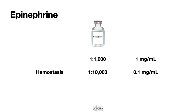On the other hand, if we want to use epinephrine to prevent bleeding during polyp resection — either endoscopic mucosal resection (EMR) or endoscopic submucosal dissection (ESD) — then we use a more diluted epinephrine at 1 in 100,000 dilution, that is 0.01 milligram per ml. To summarize: for hemostasis, 1 in 10,000; for EMR, 1 in 100,000.